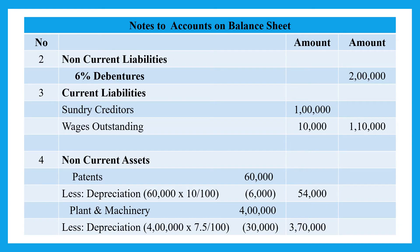Working note number three is current liabilities — sundry creditors. That is Rs. 1 lakh rupees. Wages outstanding, after adjustments in the profit and loss account and balance sheet, amount to Rs. 10,000. So total current liabilities are Rs. 1 lakh 10,000 rupees.